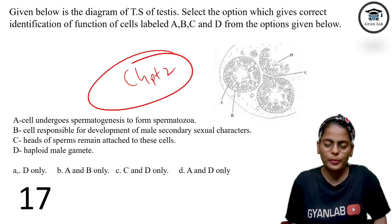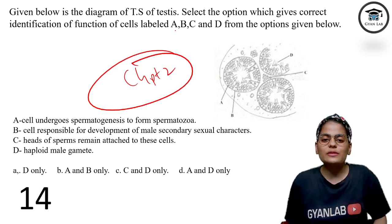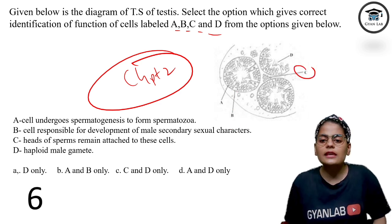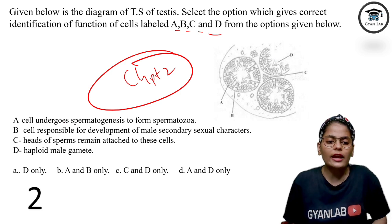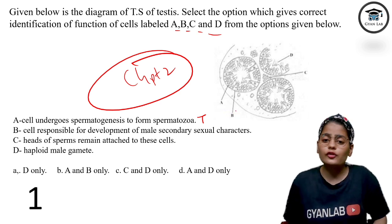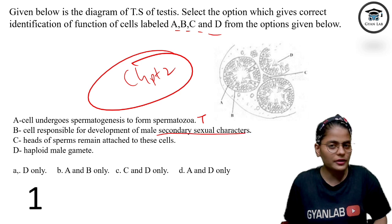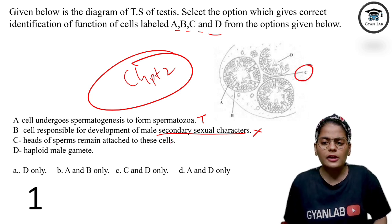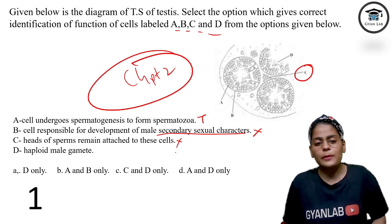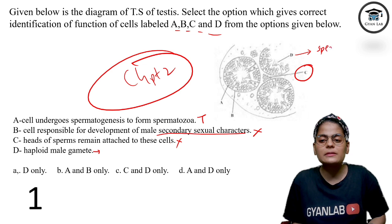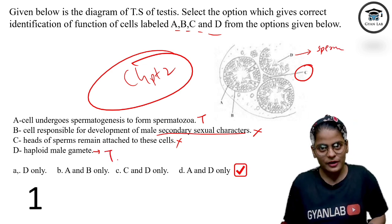Now this is your favorite question from Chapter 2, Human Reproduction. You have to find the correct function for A, B, C, and D in the diagram. A has germinal epithelial cells — A undergoes spermatogenesis to form spermatozoa, which is true. B has nurse cells — B being responsible for development of male secondary sexual characters is false; that is the function of Leydig cells. C — head of sperm remains attached to nurse cells, which is correct. D represents sperm, and sperm are always haploid, so D is the haploid male gamete — correct. Only options A and D are in the correct state.